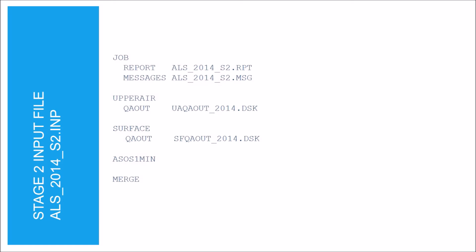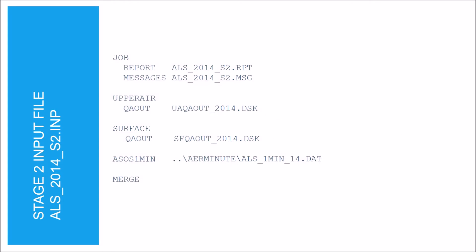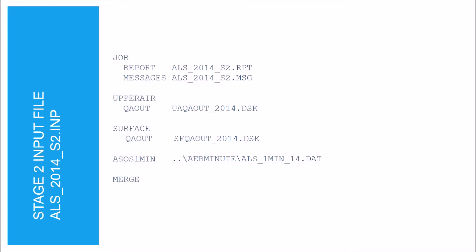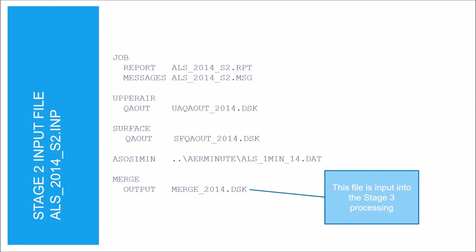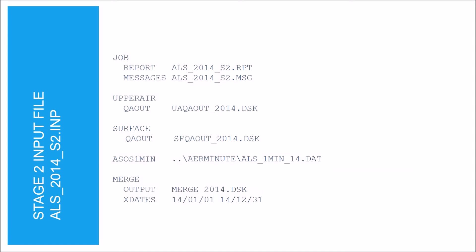The QA out keyword specifies the files with quality assured upper air sounding and hourly surface observation data — both generated in the Stage 1 processing. Next, list the file with the 1-minute ASOS wind data. This is the file output by AirMinute, which is why you need to run AirMinute before AirMet. In the merge section, define the output file name under the output keyword; this file will be input into Stage 3 processing. Then specify the modeling dates under the X dates keyword. The data was converted to local time in Stage 1, so we don't need to include data from 2015 — our data period is January 1st to December 31st, 2014.